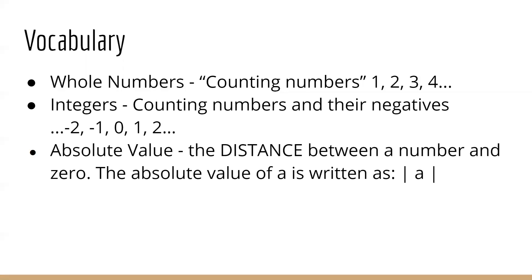Our last vocabulary word is absolute value. Absolute value is the distance between a number and zero. So the absolute value of A is going to be written as those two lines on either side of an A.